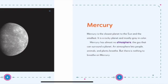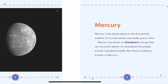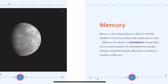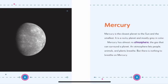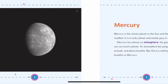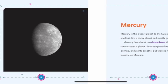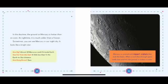Mercury. Mercury is the closest planet to the sun and the smallest. It is a rocky planet and mostly gray in color. Mercury has almost no atmosphere, the gas that can surround a planet. An atmosphere lets people, animals, and plants breathe, but there is nothing to breathe on Mercury. In the daytime, the ground on Mercury is hotter than an oven. At nighttime, it is much colder than a freezer. Sometimes you can see Mercury in our night sky. It looks like a bright star.